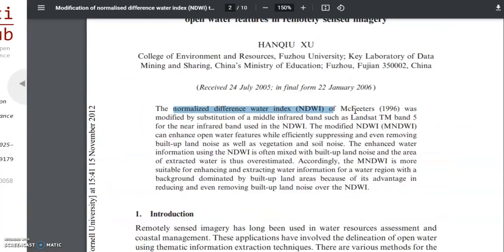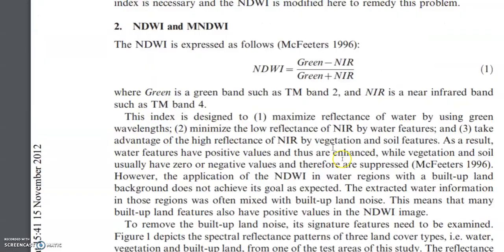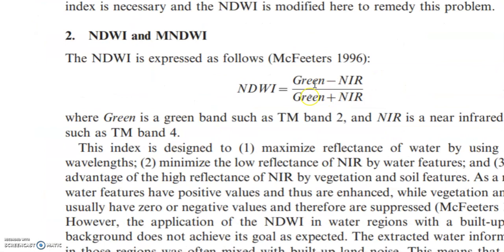NDWI was first proposed by McFeeters in 1996. They used two bands: the green band and the near-infrared band. The formula is: green minus near-infrared, divided by green plus near-infrared. In the case of Landsat 4 and Landsat 5 Thematic Mapper, the green band is band 4, with a wavelength of 0.76 to 0.90.